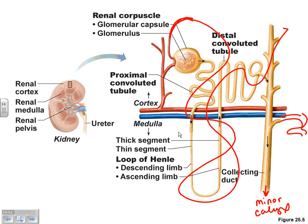What controls the movement of water at the DCT and collecting duct? That's the force that drives the movement of water. What tells your body whether or not to absorb the water? ADH and aldosterone — your hormones. They work at the DCT and the collecting duct. We've already talked about those hormones, but I want to make sure you remember that before we go any further.